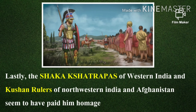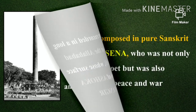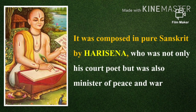The Saka of Western India and Kushan rulers of North Western India and Afghanistan seem to have paid him homage. The achievements of Samudra Gupta are recorded in a long inscription engraved on the Allahabad pillar, i.e. the Prayag Prashasti, whose surface also contains inscriptions of Ashoka and the Mughal emperor Jahangir. It was composed in pure Sanskrit by Hari Sena, who was not only his court poet but also minister of peace and war.